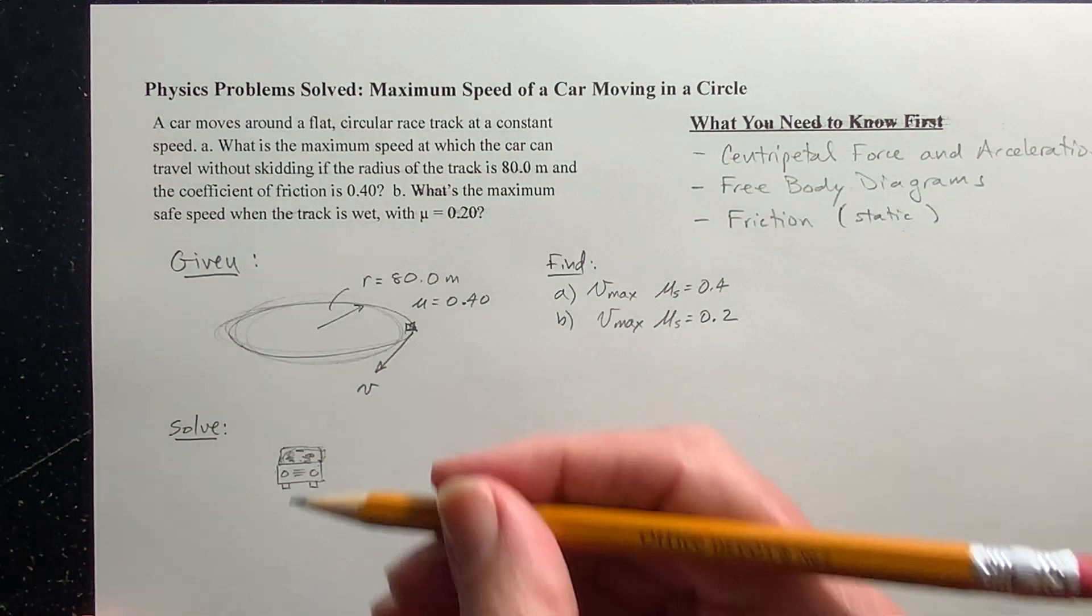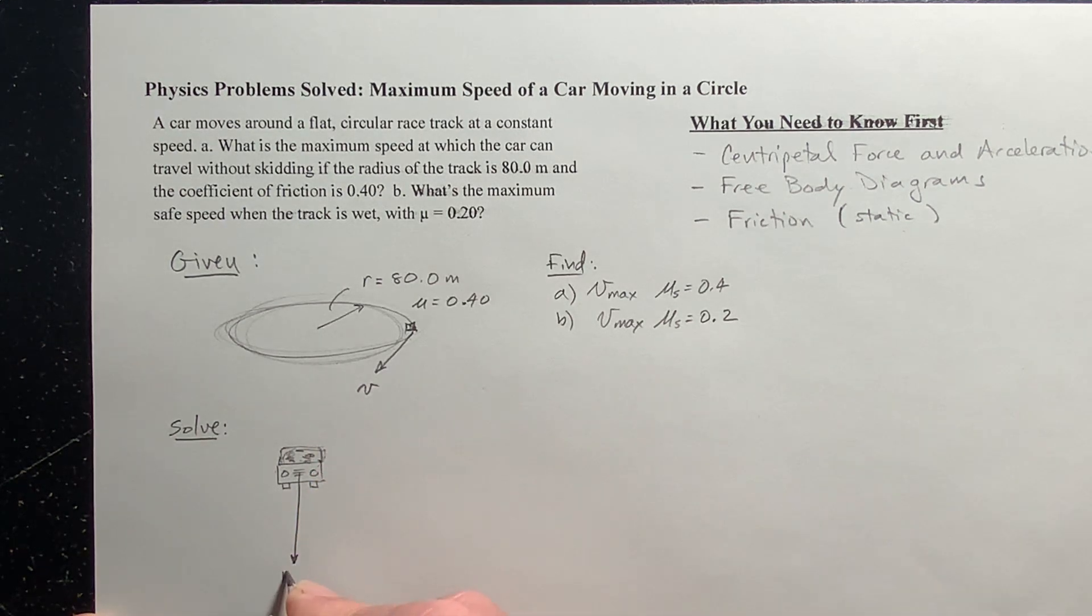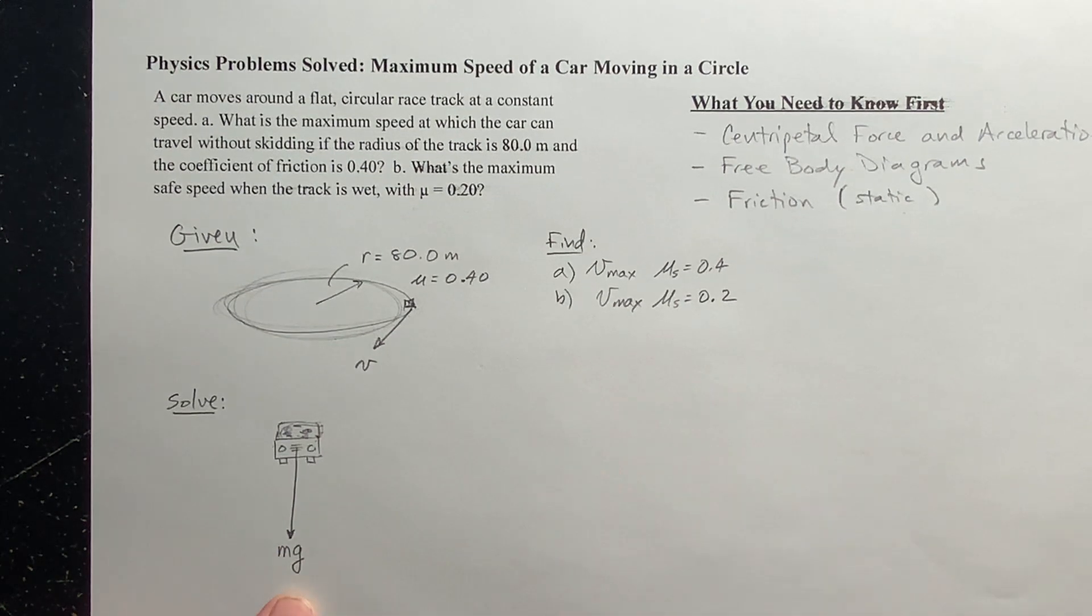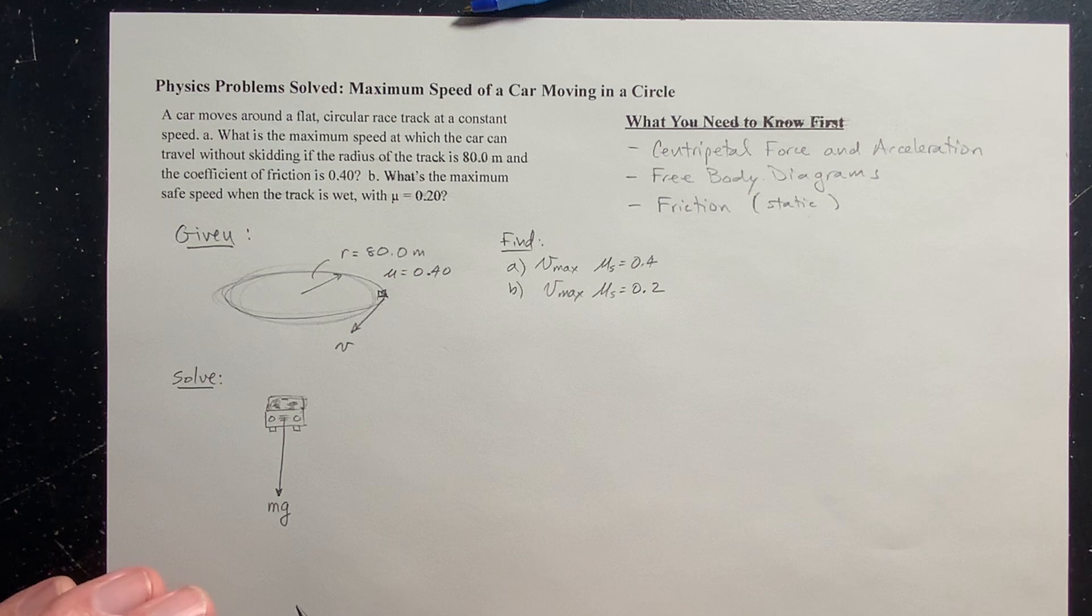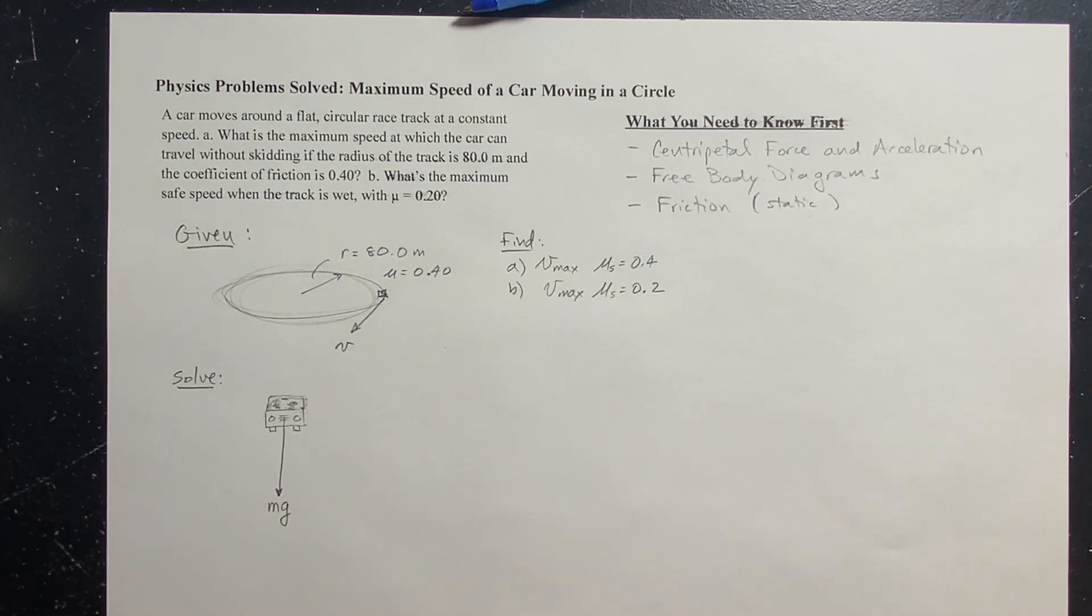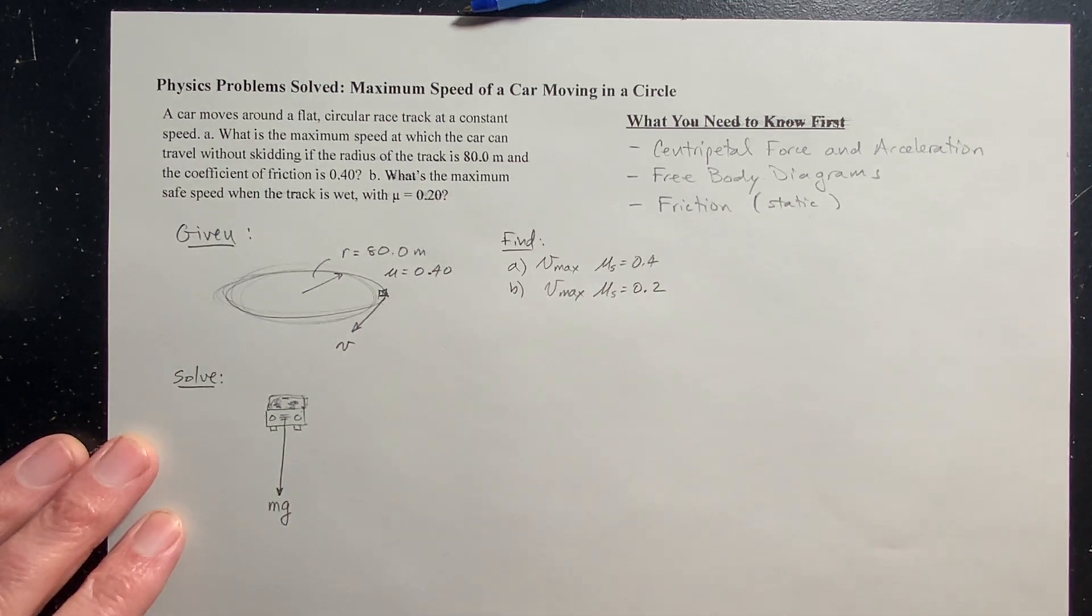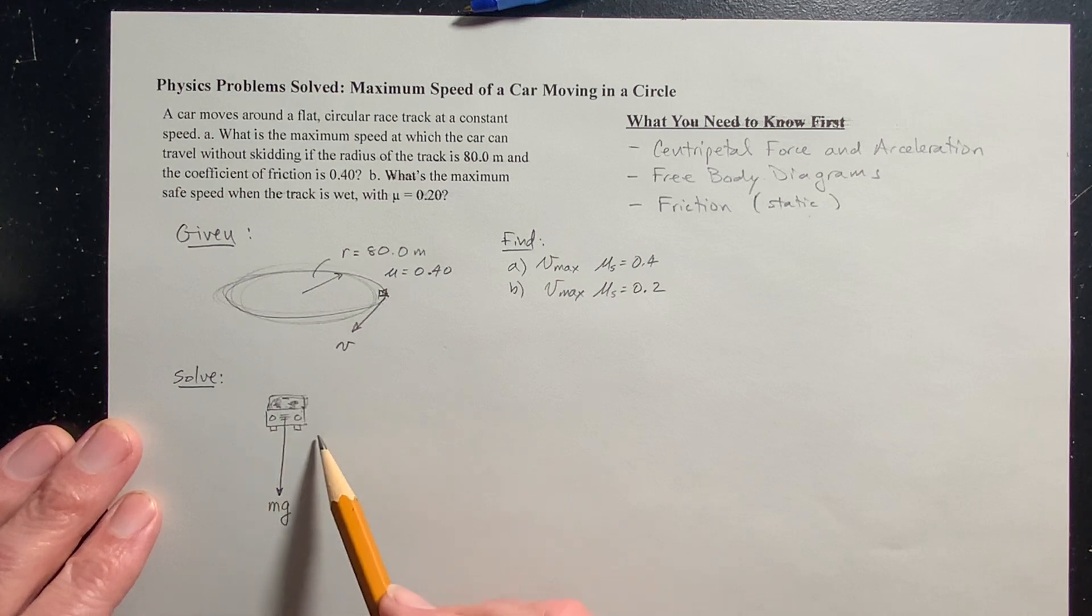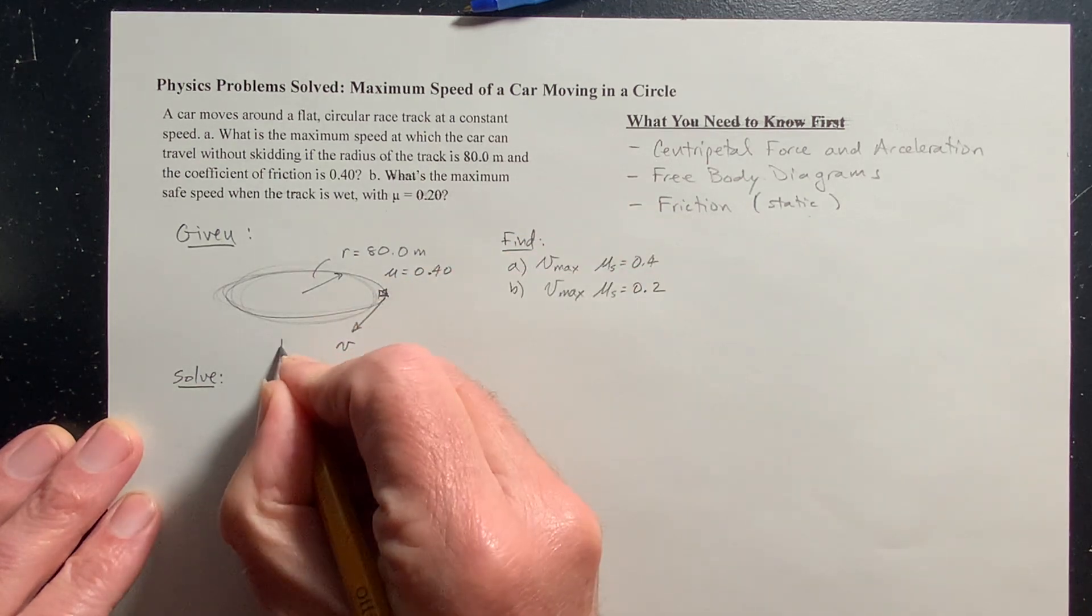Now we want to draw the forces that are acting on the car. Obviously gravity is trying to pull it down. So we've got the force of gravity, which is the mass of the car times earth's gravitational field, mg. Notice that they didn't give us the mass of the car. If that happens in a problem like this, don't panic. It will probably cancel out. Why isn't this car accelerating towards the center of the earth? Because it's on the ground and the ground is pushing up on it with a normal force. There's my normal force.